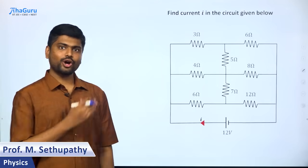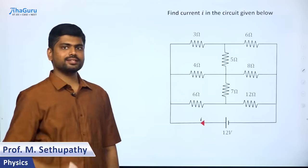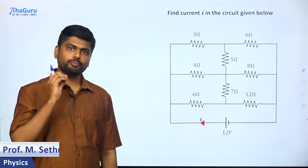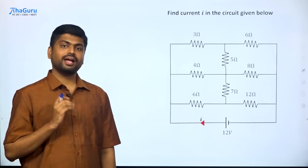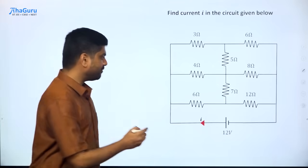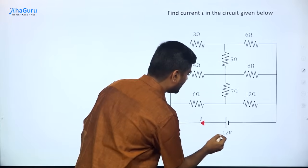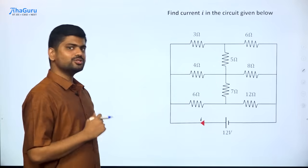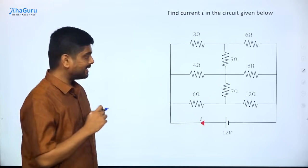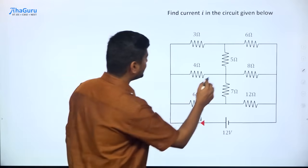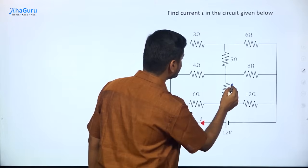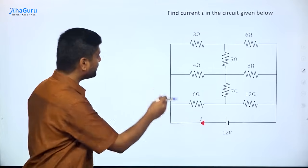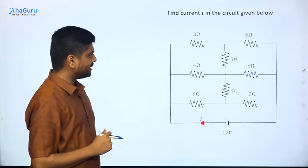Hi, I have a complicated looking circuit with me. I would like all of you to pause the video and try to figure out the current through this 12 volt battery. Now let's solve this circuit. For a minute, let's assume that this 5 ohm and 7 ohm resistors are not there — I'm going to remove these two resistors.